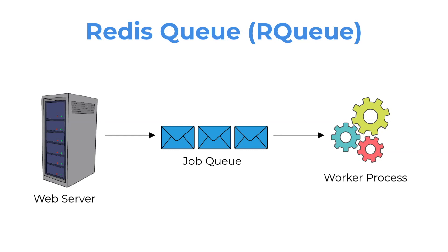Specifically, we use a command to work on the queue. This command often begins with L, like left, or R, like right, showing which side should be checked first. L is for the head side, and R is for the tail side.